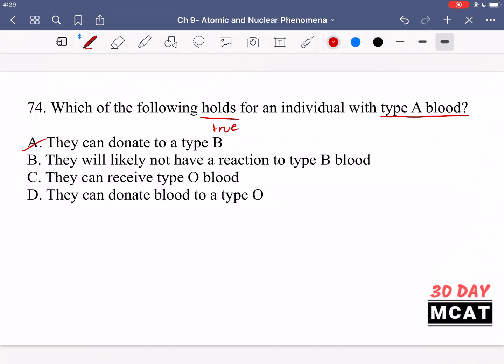Option B is saying they will likely not have a reaction to type B blood. No, just like type B will have a reaction to their blood. If they receive type B blood, they have antibodies against this, and therefore there's going to be a reaction.